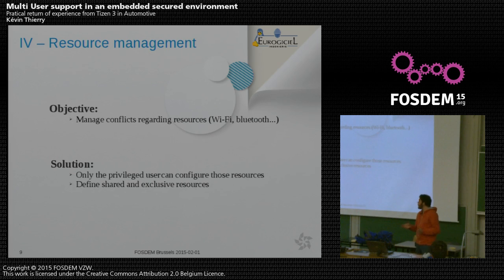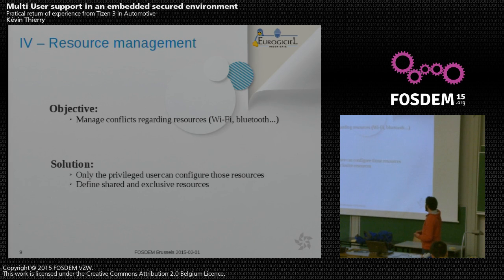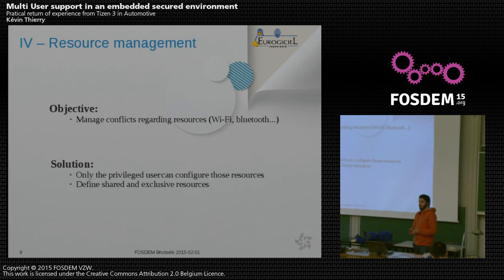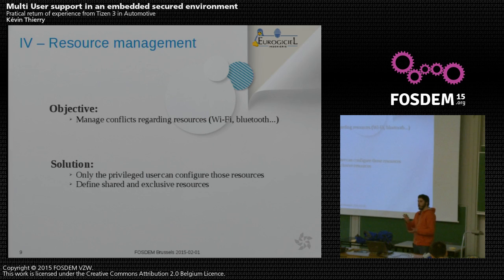The main issue with resource management is handling conflicts. For example, if one user wants to set a particular IP on the Wi-Fi device and another wants a different IP, we need to prevent that conflict. The solution is to have only one privileged user who can configure shared resources — acting as the administrator. We also need to define shared versus exclusive resources: for example, if I connect my phone via Bluetooth to access my files, I may not want to share it with other users. Conversely, sometimes you want to share a resource. We need a way to configure which user can access what.